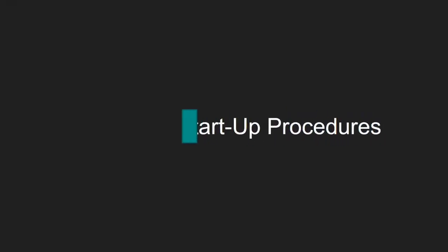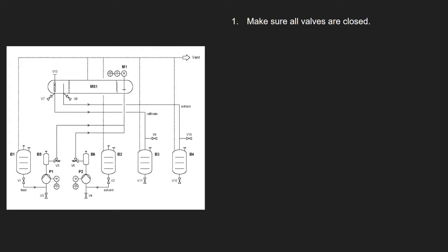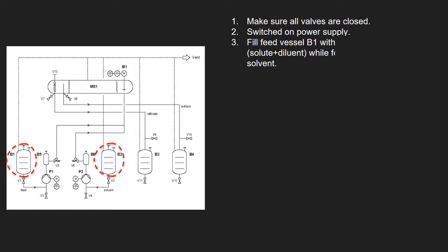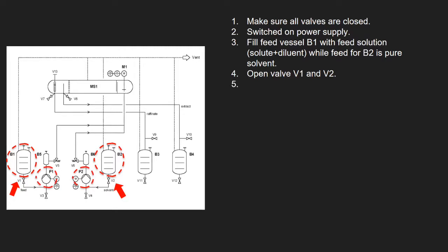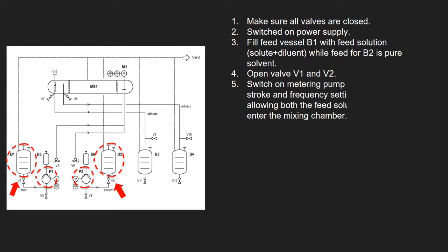Let us move on to General Startup Procedures. First, ensure that all valves are closed. Second, switch on the power supply for the unit. Third, prepare the desired chemicals and fill feed vessel B1 with the feed solution which is solute plus diluent, and fill feed vessel B2 with pure solvent. Next, open valves V1 and V2. Switch on the metering pumps P1 and P2 and adjust the stroke and frequency settings to mid range. Allow both the feed solution and solvent to enter the mixing chamber.